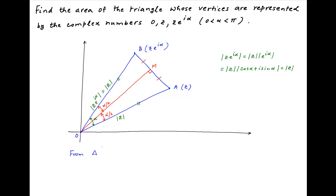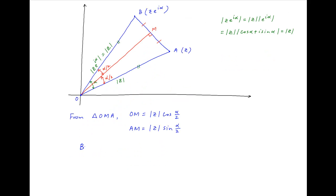Now, in right-angled triangle OMA, note that OM is equal to the absolute value of Z times cos(alpha/2) and AM is equal to the absolute value of Z times sin(alpha/2). Now, BM is equal to AM, and this is equal to the absolute value of Z times sin(alpha/2). Therefore, AB, which equals AM plus BM, is equal to 2 times the absolute value of Z times sin(alpha/2).